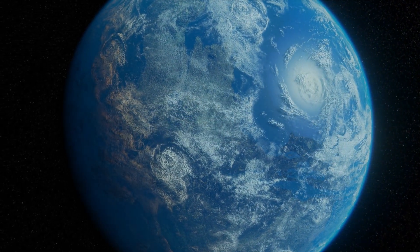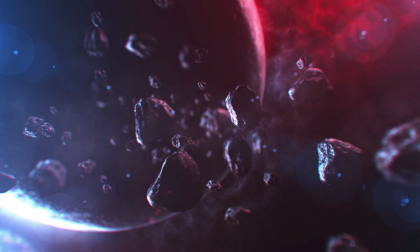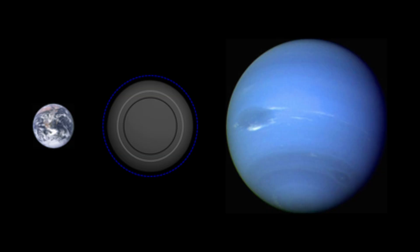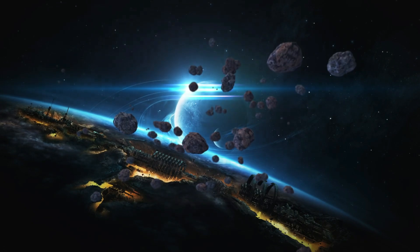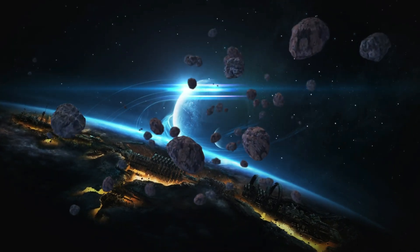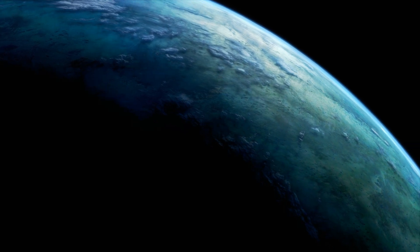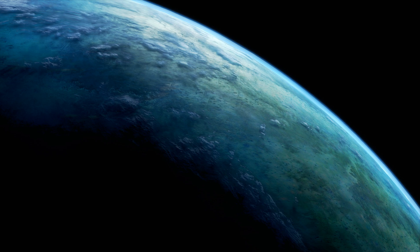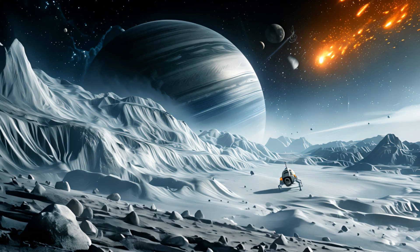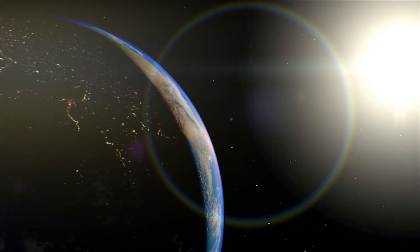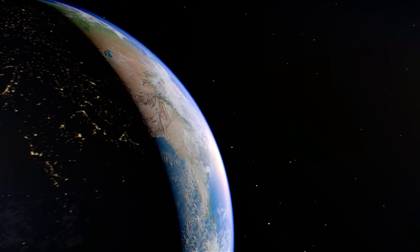The habitable nightmare. Our search for the most terrifying planets in the universe now takes us to a world that hits a little closer to home. This is Gliese 581c, a planet located just 20 light years away in the constellation Libra. Now what makes Gliese 581c so terrifying isn't necessarily its environment, but rather its potential. You see, Gliese 581c is what astronomers call a super-Earth, a planet that's larger and more massive than Earth, but smaller than a gas giant.